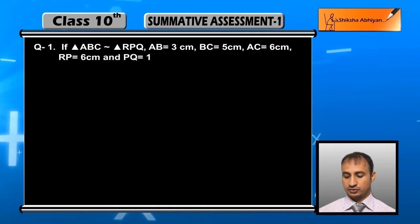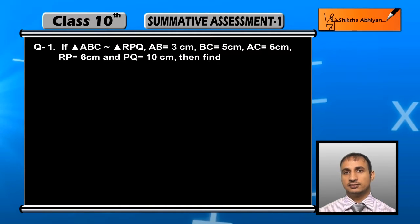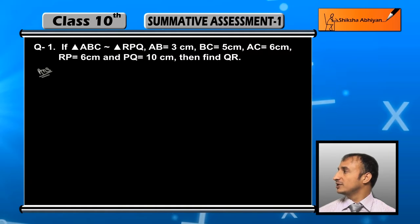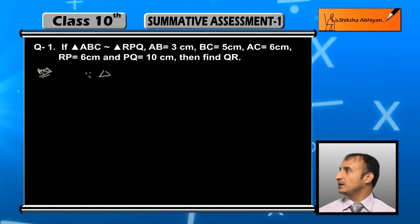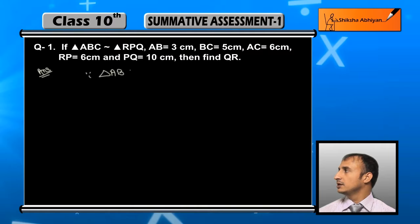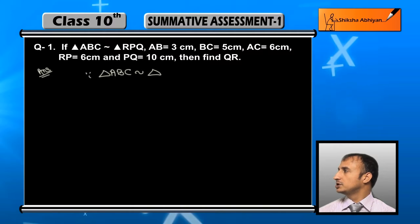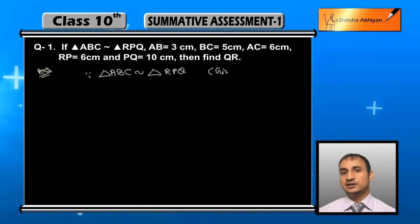Question में यहाँ पर student हमें दोनों triangle जो है triangle ABC, since triangle ABC is similar to triangle RPQ यह हमें given है तो आप जानते है।